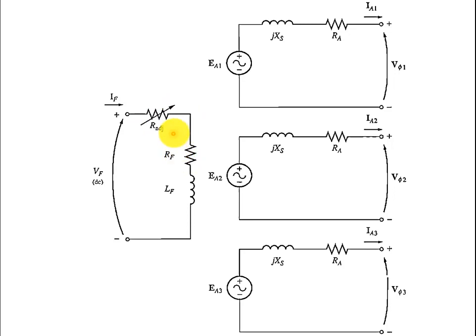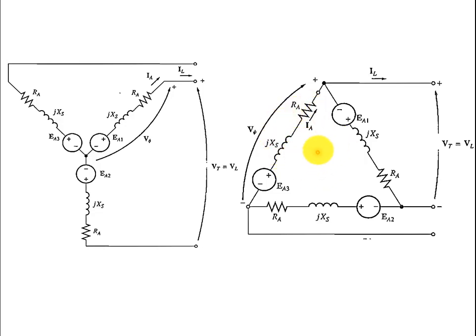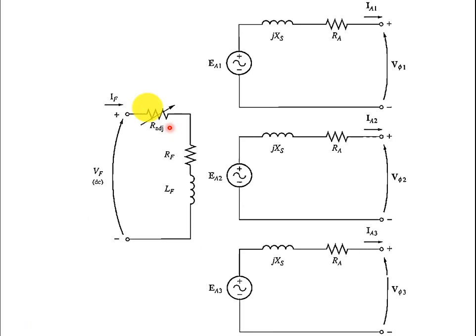The DC source applied to the field winding can be made adjustable to control the field current IF. The stator can be connected in either Y or delta configuration. This represents the armature side of the synchronous generator's equivalent circuit. On the rotor side we simply have the field winding.